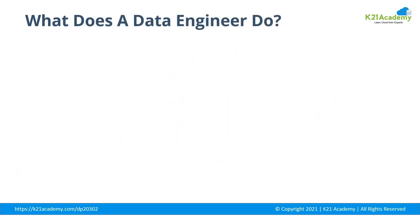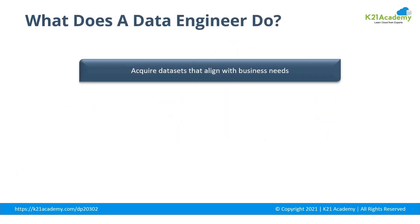Now let's talk about what does a data engineer do. Data engineers can work in a variety of settings to build systems that collect, manage, and convert raw data into usable information for data scientists and business analysts to interpret. The ultimate goal is to make data accessible so that organizations can use it to evaluate and optimize their performance.